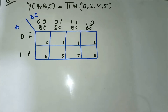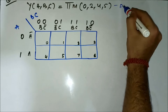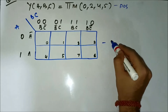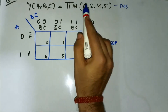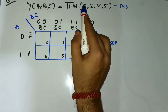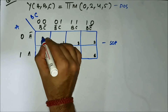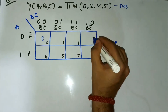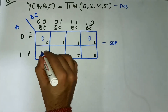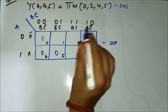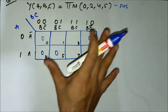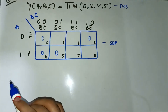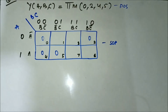This is the fourth question related to mapping of POS expressions in SOP KMAP. Here we have the POS expression given in terms of the max terms: 0, 2, 4, 5. We have marked all the respective cells as per the max term values, placing 0 because it is max terms POS.